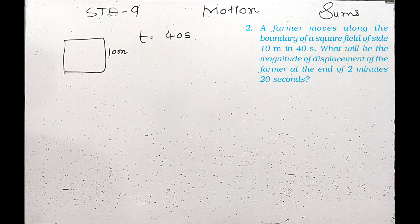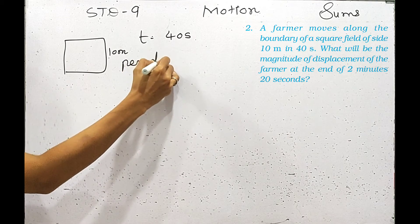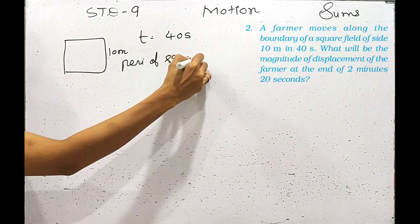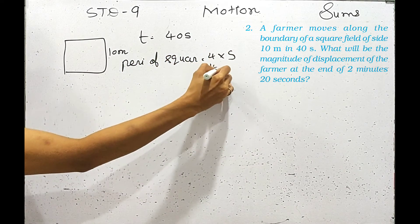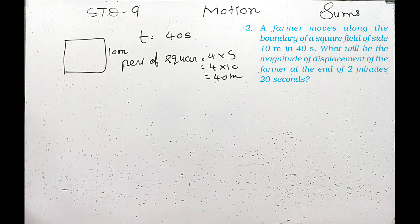I will find the perimeter. The perimeter of a square: 4 multiplied by side, so 4 multiplied by 10, so 40 meters.